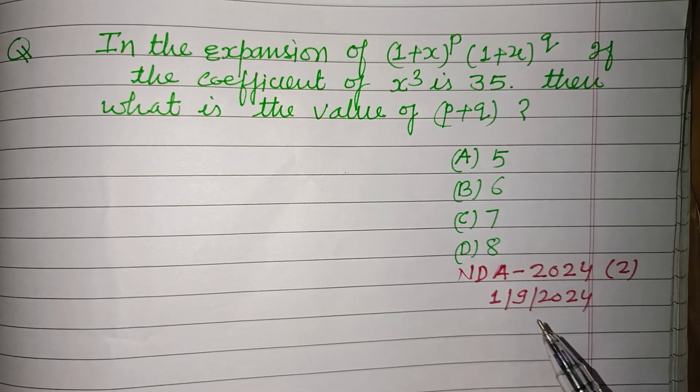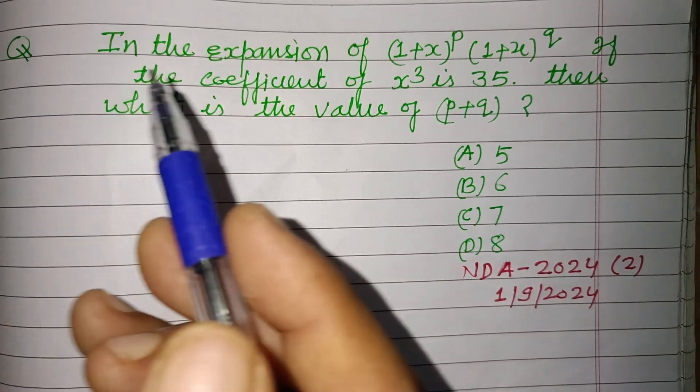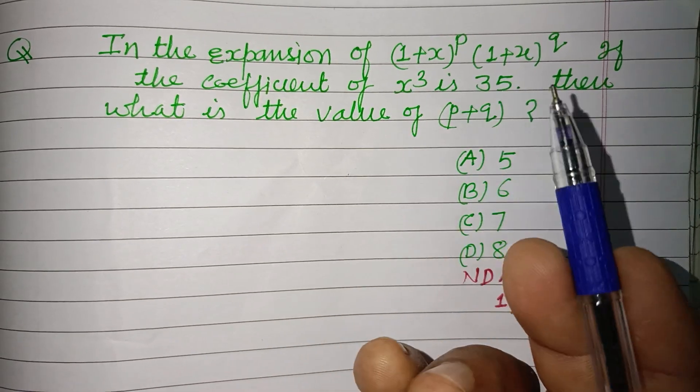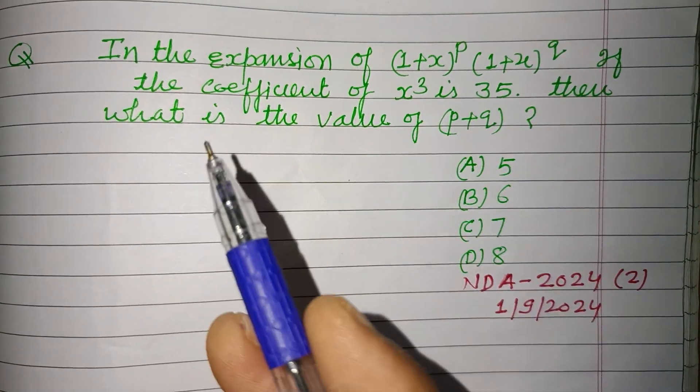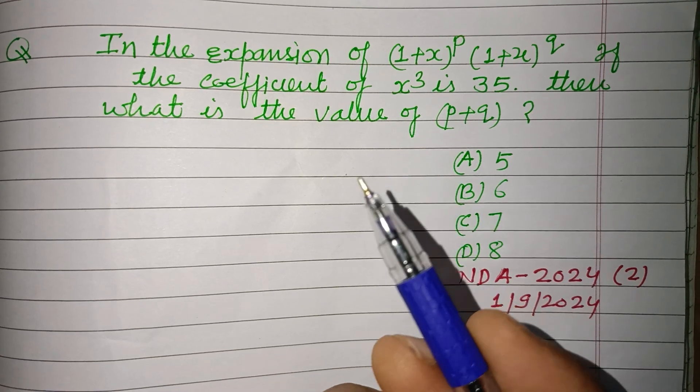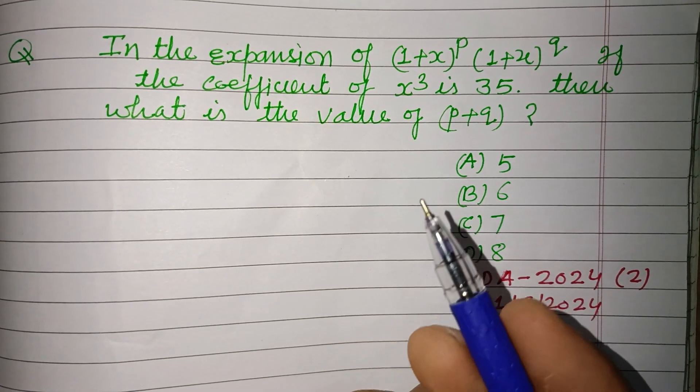Second exam held on 1st September 2024. In the expansion of (1+x) to the power p times (1+x) to the power q, if the coefficient of x³ is 35, then what is the value of p plus q?